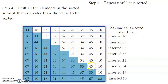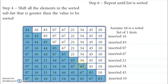The next element is 45. 45 is compared from the first position in the sorted sublist. 7 — bigger. 16 — bigger. 21 — bigger. 34 — bigger. 44 — bigger. Then 67 — 45 is smaller than 67. So 45 has to come before 67. We shift 67 and 83 to the next place, and 45 is inserted in the correct position. Now the first eight elements are sorted.